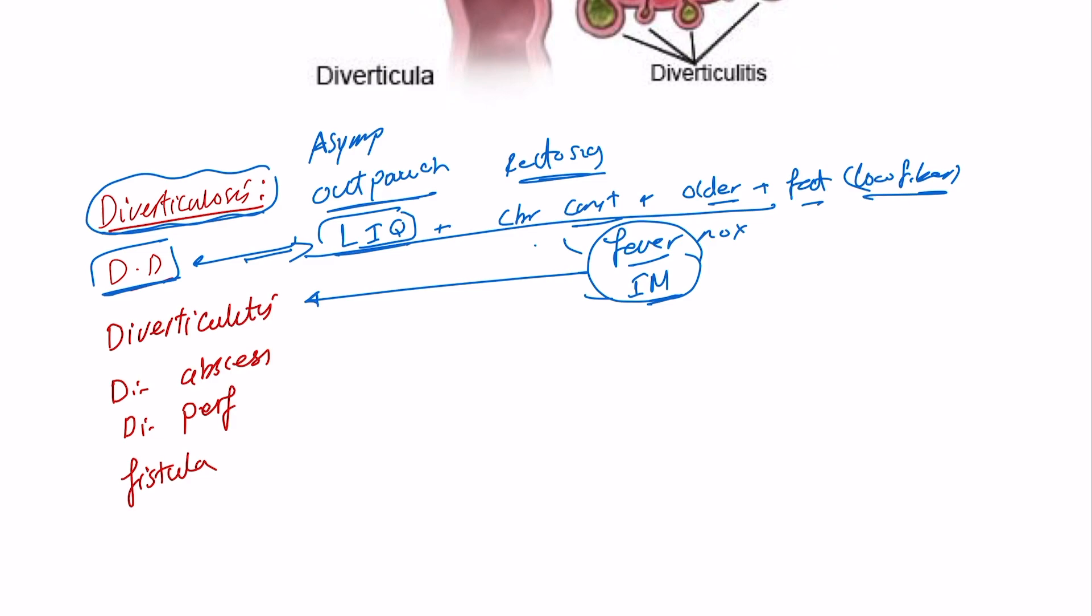Moving forward, this diverticulum in the wall might perforate and become very weak, so this is diverticular perforation, and they will come with peritonitis or significant abdominal pain in this area.